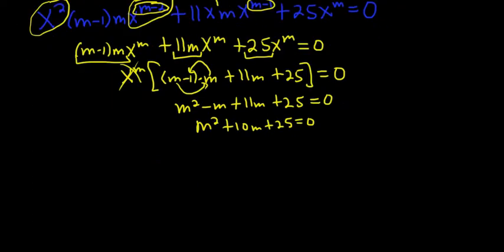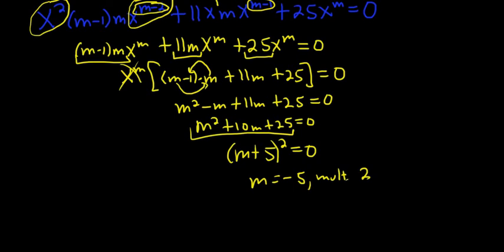This actually factors nicely. This is m plus 5m plus 5. It's actually m plus 5 quantity squared equals 0. It's a perfect squared trinomial. So we get m equals negative 5, and the multiplicity is 2. So we have a repeated real root.